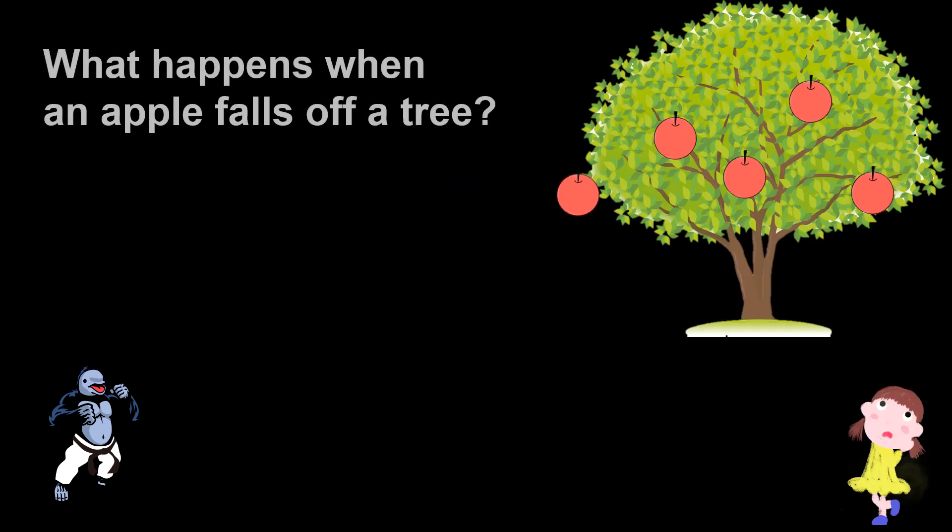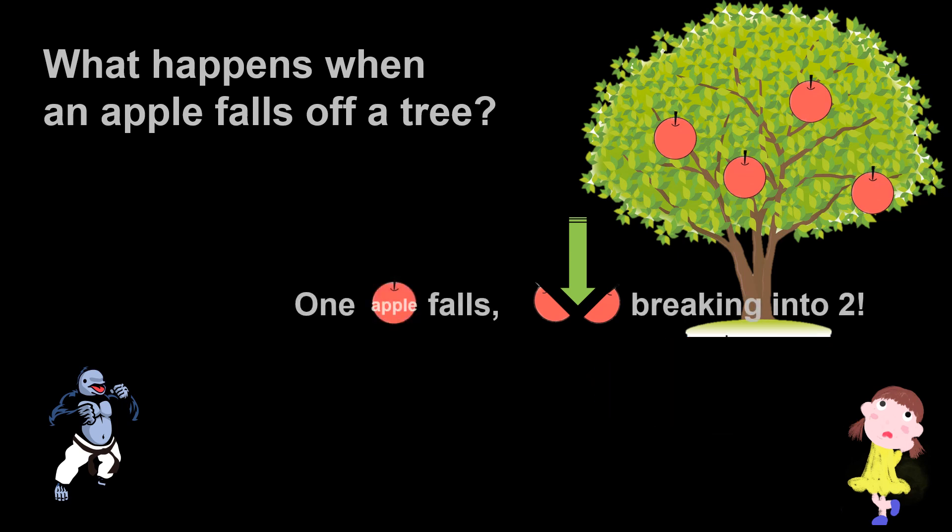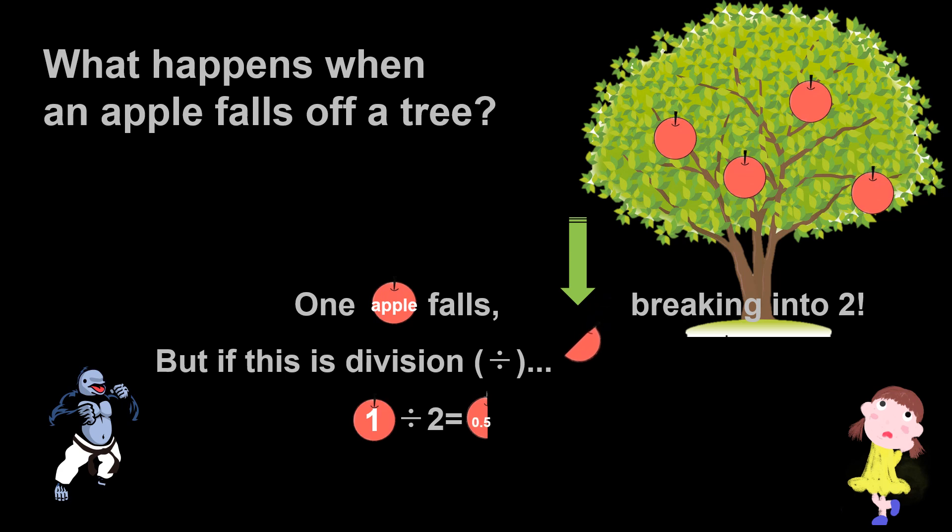What happens when an apple falls off a tree? One apple falls, breaking into 2. What if this is division? 1 divided by 2 is 0.5, but...